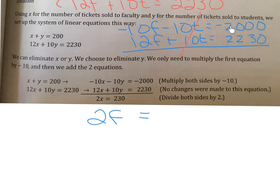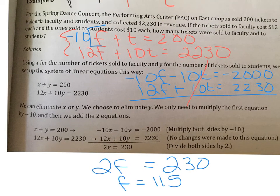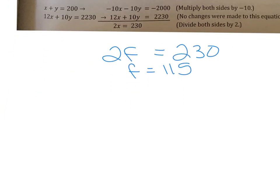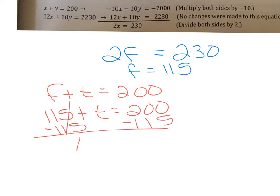Adding the equations, the t's eliminate and we get 2f = 230. Dividing by 2 gives f = 115, meaning 115 tickets were sold to faculty. To find student tickets, substitute back into f + t = 200: 115 + t = 200. Subtracting 115 gives t = 85. So 85 tickets were sold to students.